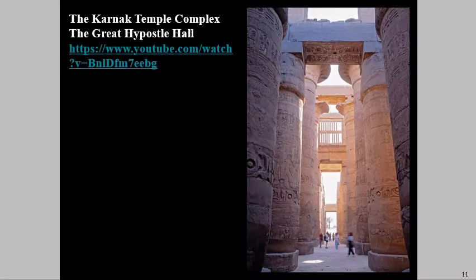Here's the hypostyle hall. It has inscriptions of all the different pharaohs — their cartouches, their accomplishments, and all those kinds of inscriptions. They would have been painted and colored. The columns also have capitals at the top — those are papyrus plants that you're looking at.